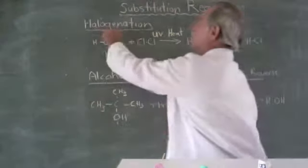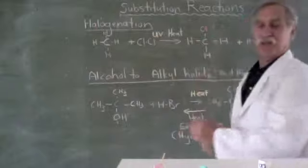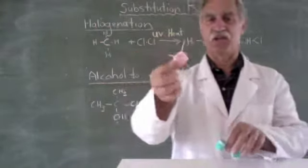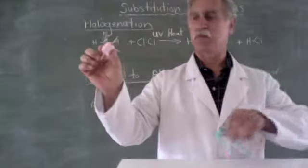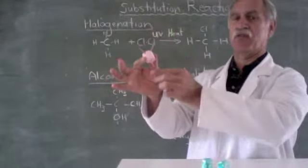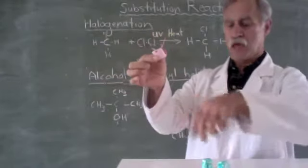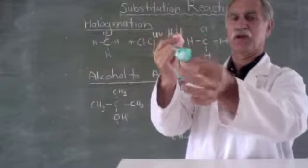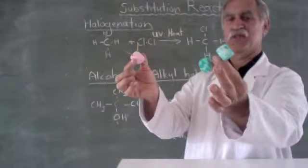So we've taken this thing and substituted with chlorine in its place. Let's just have a look at how this might occur with our marshmallow molecules. So there is our methane, one, two, three, four hydrogens. Here is our chlorine with two chlorine atoms.